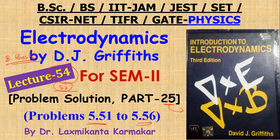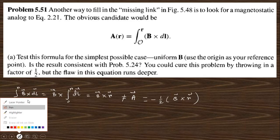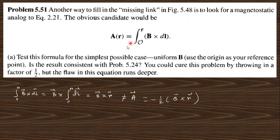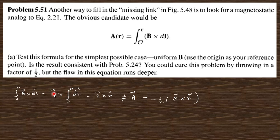These questions are in chapter 5, which covers magnetostatics. Let's start with question 5.51, which says: another way to fill the missing link in figure 5.48. That figure shows relations between electric field, magnetic field, magnetic potential, magnetic vector potential, magnetic scalar potential, divergence of magnetic field, curl of magnetic field, etc. The obvious candidate is to test this formula for a uniform B, using the origin as reference point. Taking the curl of B dot dl — since B is uniform it comes outside the integration — we get curl of B = B cross r, which is not equal to A because A equals minus half B cross r.